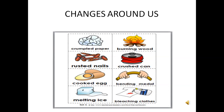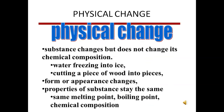From our examples: crumbled paper, rusted can, melting ice, and bending metal — these have physical properties. Burning wood, rusted nails, cooked egg, and bleaching cloths — these have chemical properties. Let's see them one by one.